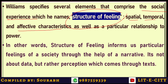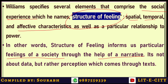In other words, structure of feeling informs us. It basically gives us an idea about the particular feelings of a society through the help of a narrative. So narrative becomes a kind of mirror — a kind of book where we can find the dominant or hegemonic structure of society, how they feel about particular codes and particular systems. It's not about data only; it's about perception, which comes through text. This is important: how we receive the text and how we are affected through certain elements in it is totally dependent upon these key elements — spatial, temporal, and affective characteristics.